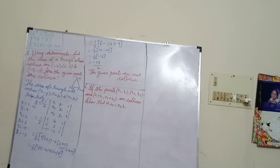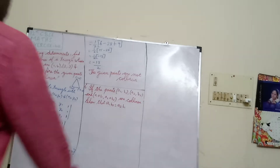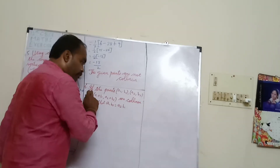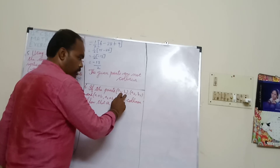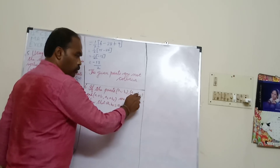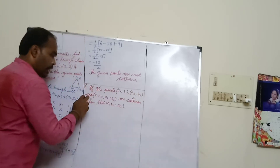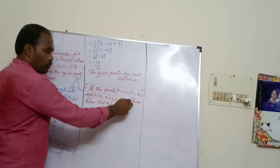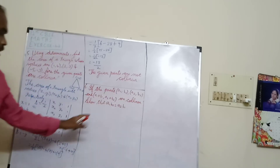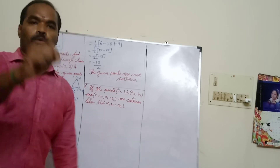This is the type of problem: find the area of a triangle and determine whether the given points are collinear or not. Next, problem 6: If the points (a1, b1), (a2, b2), and (a1+a2, b1+b2) are collinear, show that a1·b2 = a2·b1.